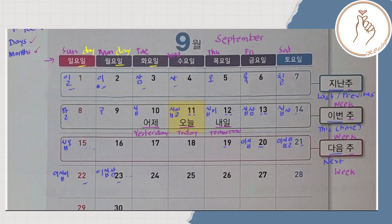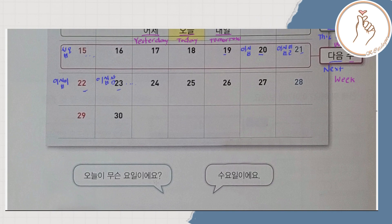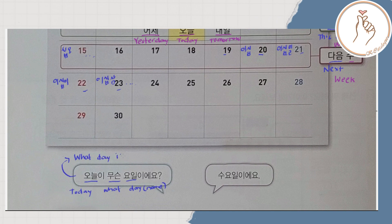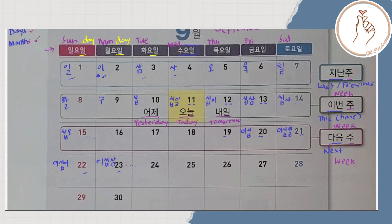Here we have an example question and answer. The question is: Onuri musun yoi rieyo? Onil means today, musun means what, and yoi means day — so the translation is 'What day is it today?' The answer is: Suyoil iyeyo. Suyoil is Wednesday, so the answer is 'It's Wednesday.'